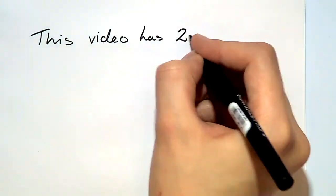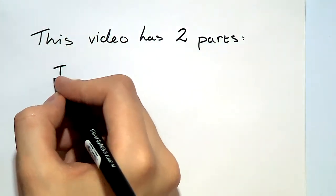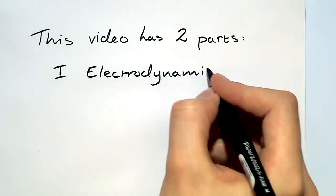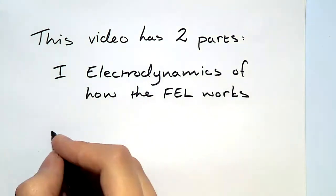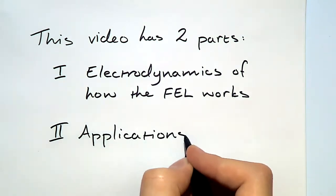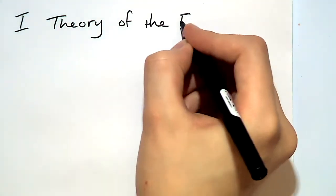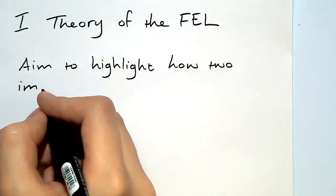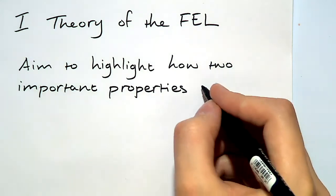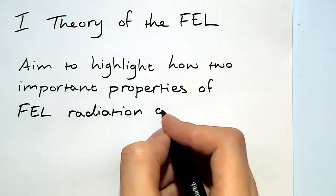This video is divided into two parts. First, we're going to look at the theoretical foundations of how the free electron laser actually works. In the second part, we're going to look at some interesting applications. Let's begin by trying to understand the theory of the free electron laser. I'm going to aim to highlight two important features of any laser source and how they arise for the free electron laser.